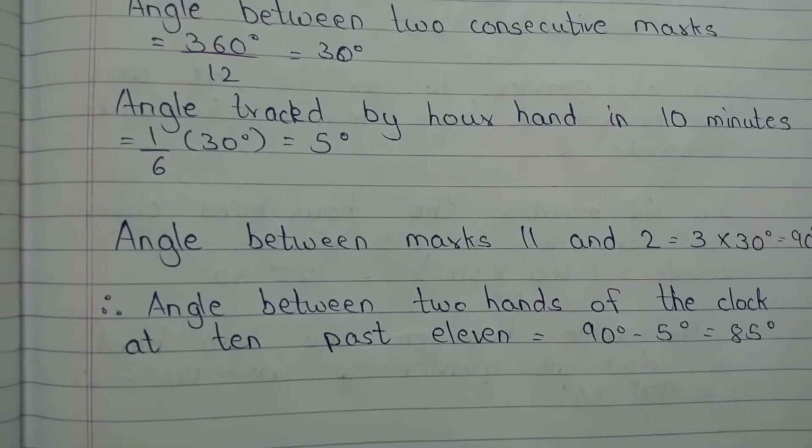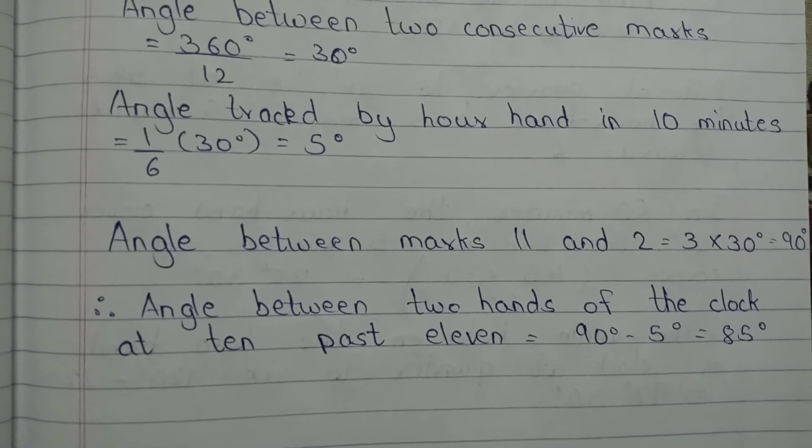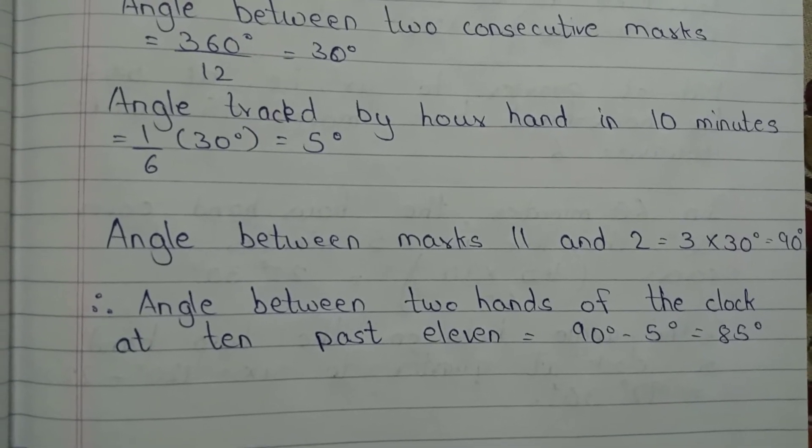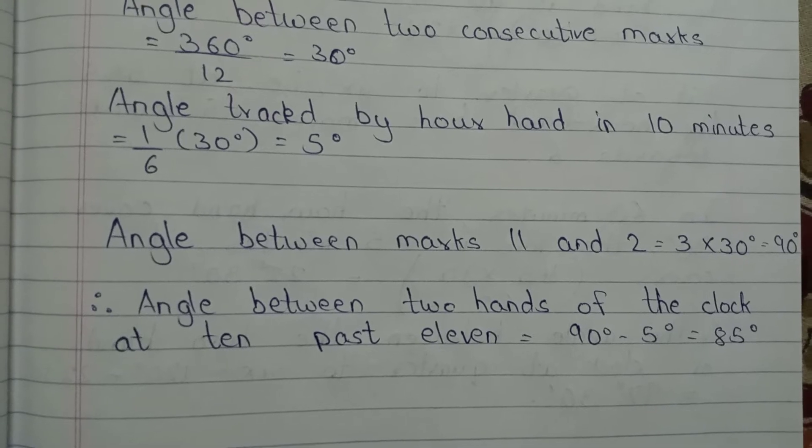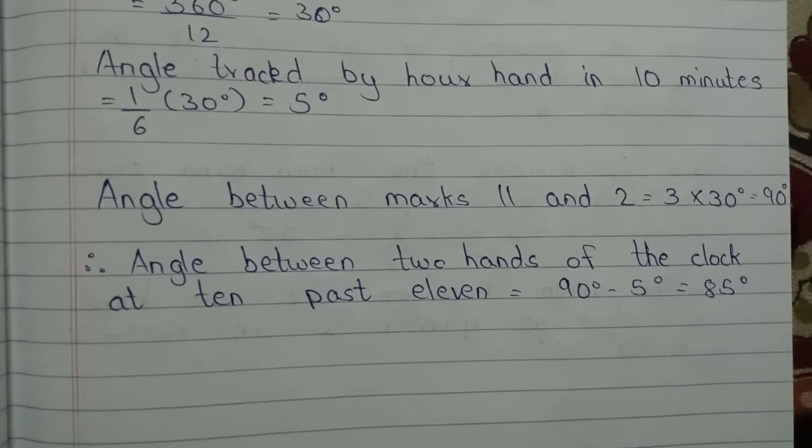So you are getting this angle which is made in 10 minutes. How much will it be in 10 minutes? One-sixth part into 30 degrees, that is 5 degrees.